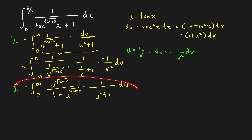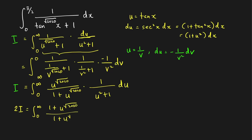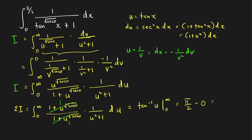Adding the two equal integrals gives 2I = ∫₀^∞ (1 + u^√2020)/(1 + u^√2020) · 1/(u² + 1) du. The (1 + u^√2020) terms cancel, leaving 2I = ∫₀^∞ 1/(u² + 1) du = arctan(u) evaluated from 0 to ∞. As u → ∞, arctan → π/2, and arctan(0) = 0, so 2I = π/2. Therefore, I = π/4.